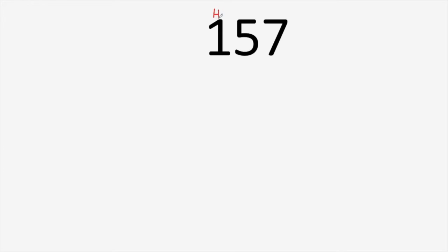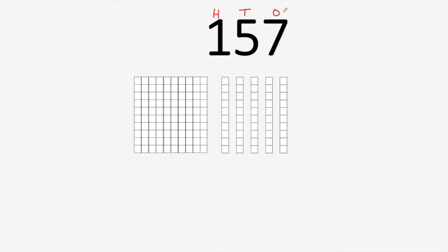Let's think about that with the number 157. When I label the digits, I see that 157 has 1 hundred, 5 tens, and 7 ones. We've also been talking about how we can represent numbers with expanded form. So if we want to show 157 with expanded form, we could say 100 plus 50 plus 7 equals 157.